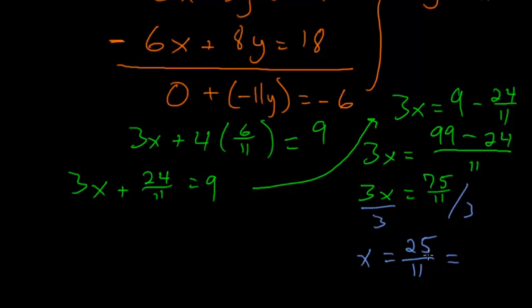But we can also write this as a mixed number. Since 11 goes into 25 twice and we have 3 left over, 2 and 3 elevenths would be our solution for x. And if we combine our two answers from x and y, we know that the two lines intersect